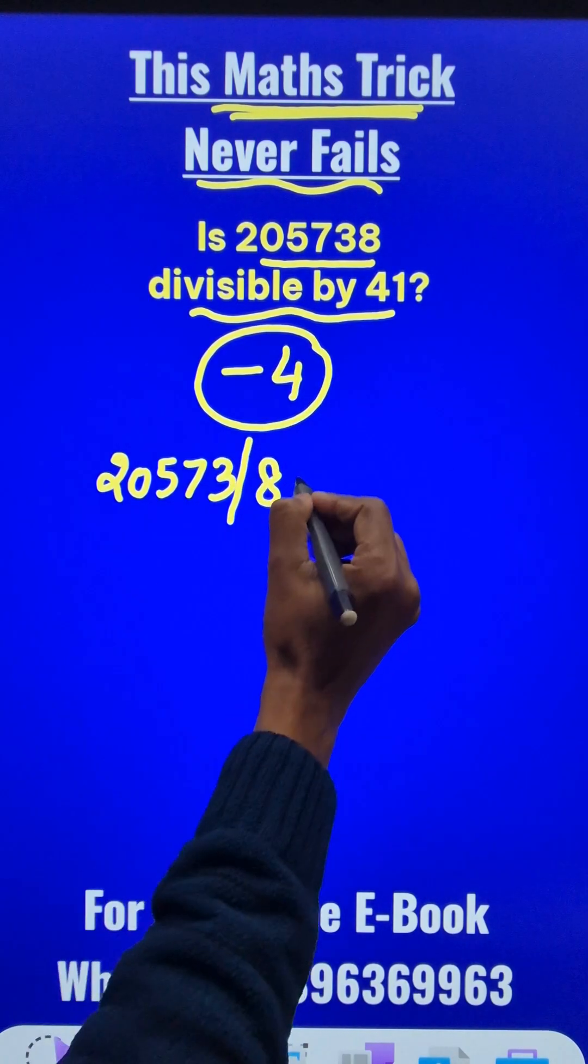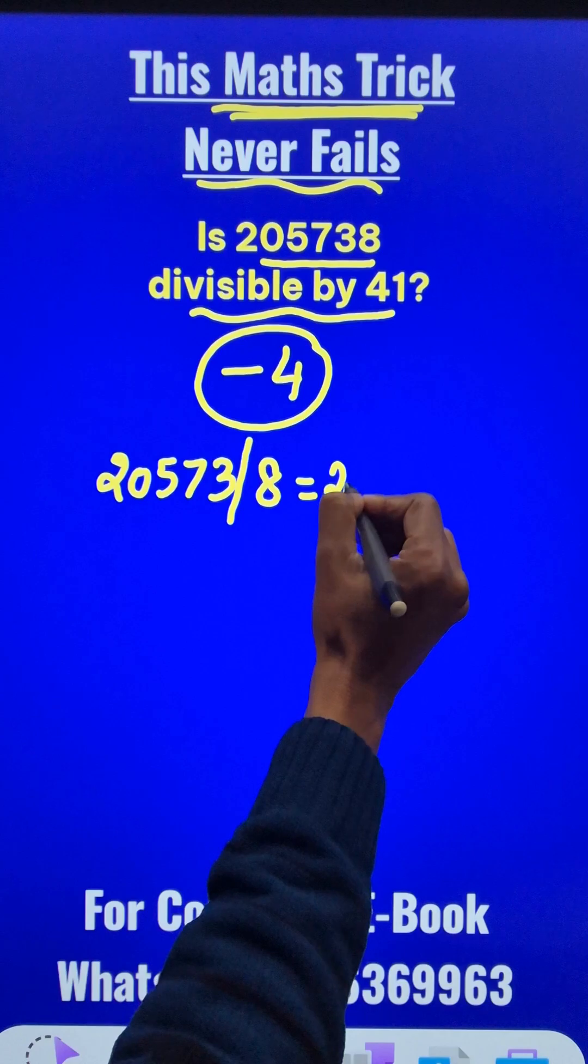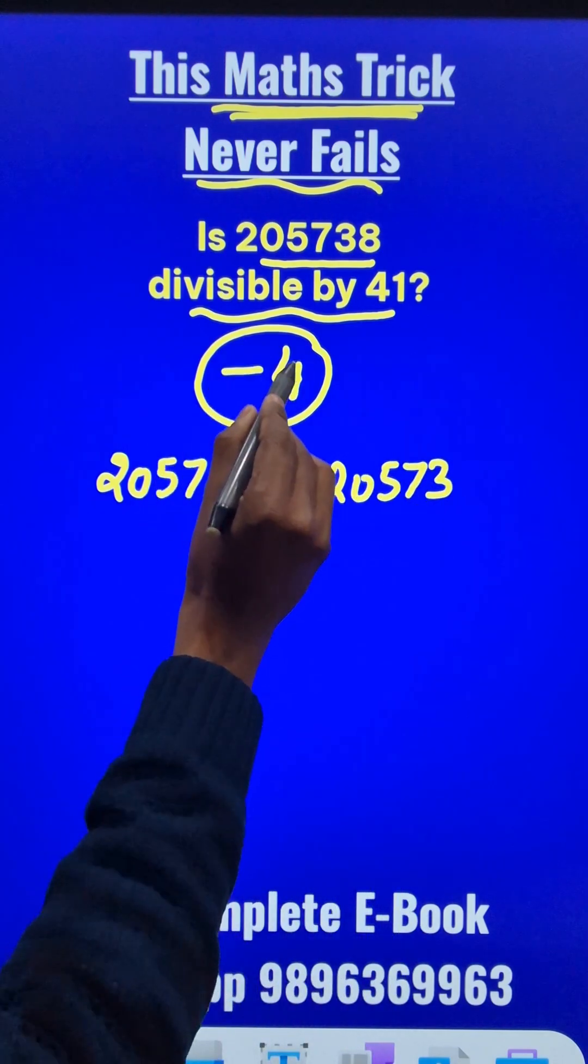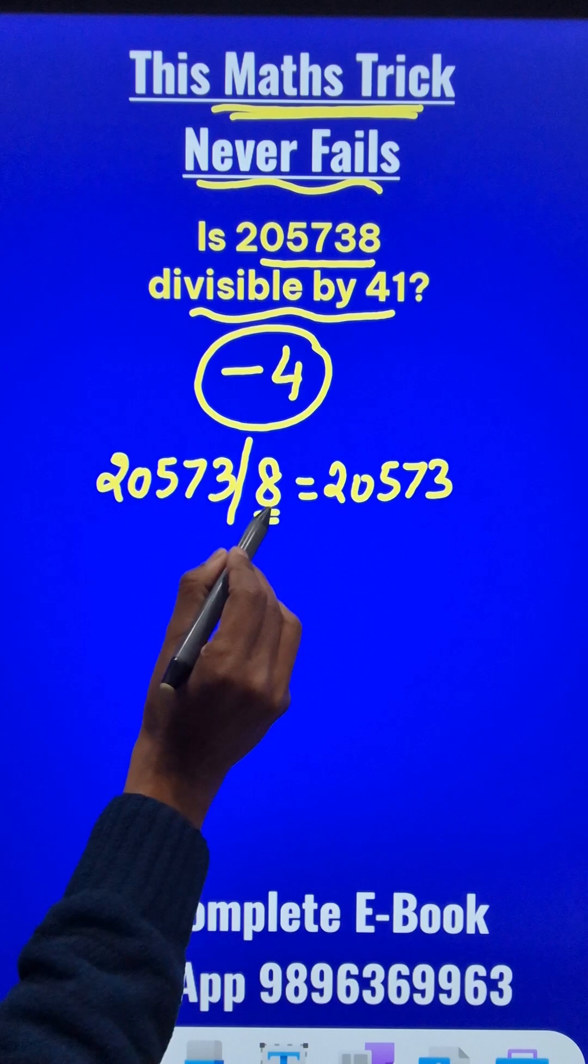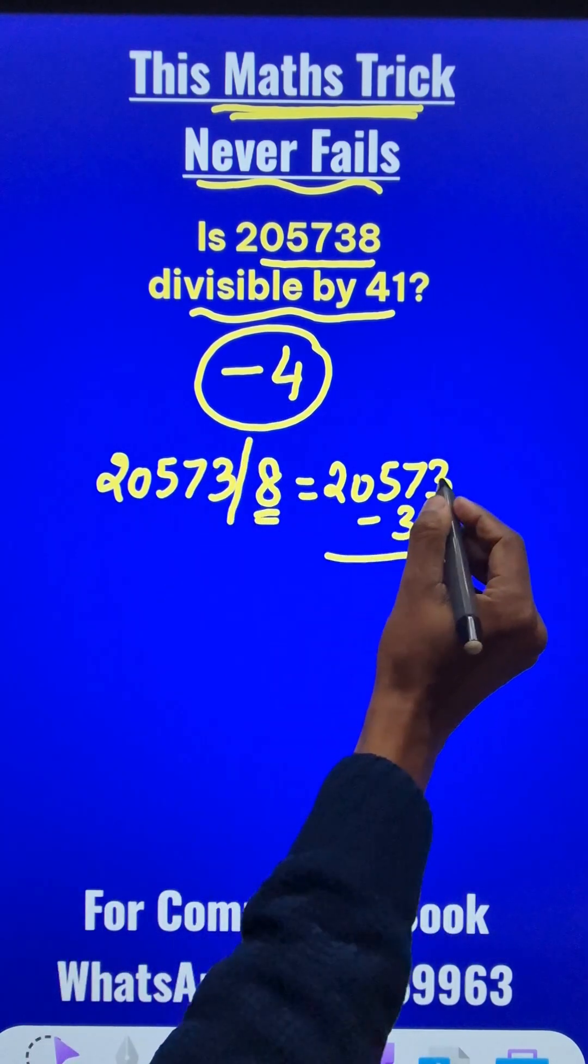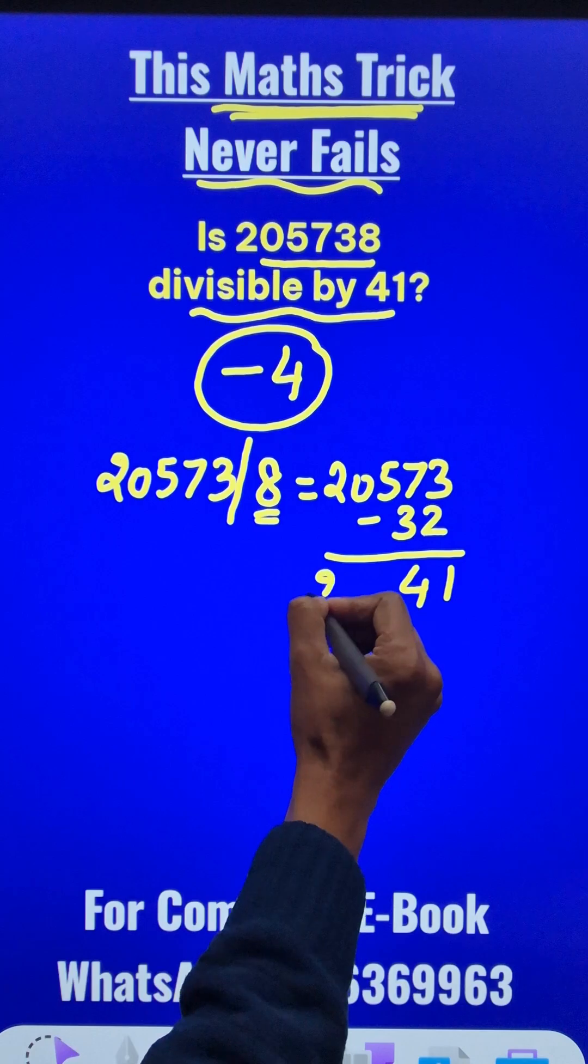So what we have to do is write the first part 20573 and from this, because this is negative 4, 4 times 8, the last digit is 32 and I will subtract 32 from this result. So what will I get? This is 1, this is 4 and then 205.